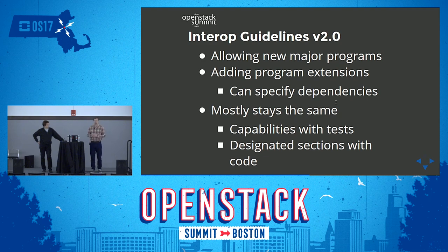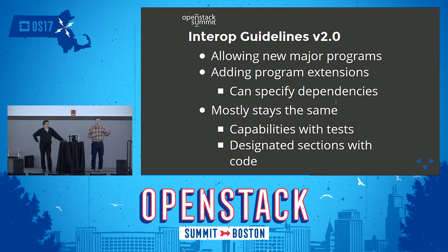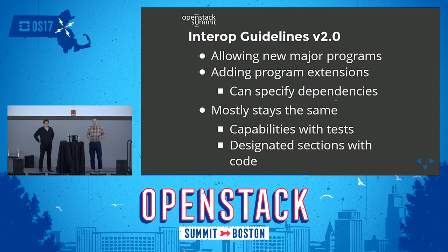We're also adding program extensions where you can specify dependencies — so you can say that orchestration could depend upon the existence of compute, networking, and storage, or the same with database. In a lot of ways, the programs mostly stay the same. We're going to identify capabilities, and these capabilities are identified with tests, so users have a way to check an existing cloud to make sure it meets the capabilities needed for their workload. We'll also have designated sections with code to identify that products we call OpenStack are indeed OpenStack.